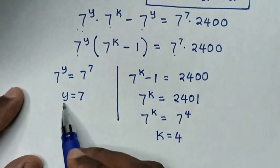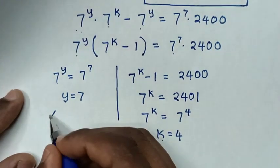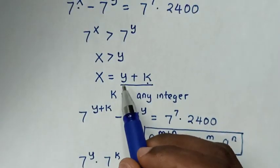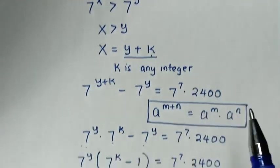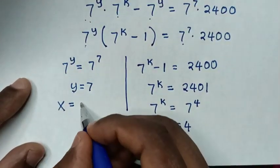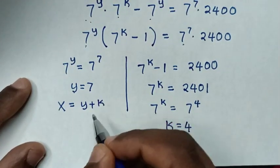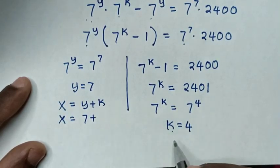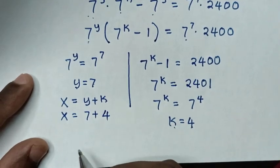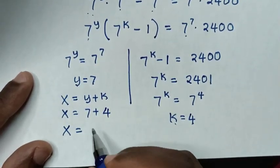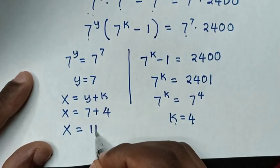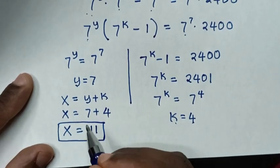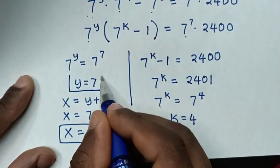Then, as we already have the value of y and k, to find the value of x, we recall from x is equal to y plus k. We substitute the values: x is equal to y which is 7, plus k which is 4. So x is equal to 11. Therefore, the final answer is the value of x is 11 and the value of y is 7.